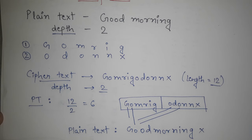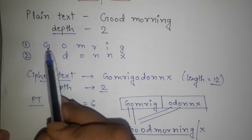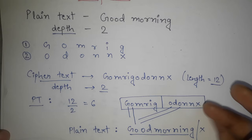Good morning. It is very simple like this. With depth 3, we can convert into 3 rows like G-O-D, M-O-R. So it is very much simple.